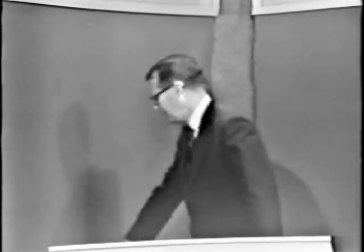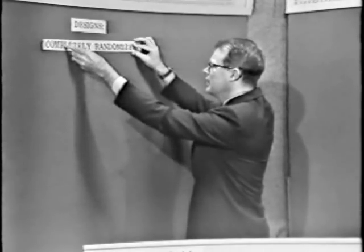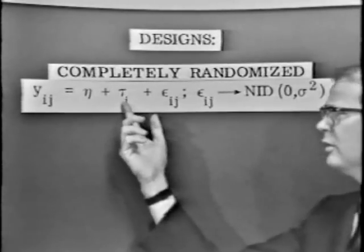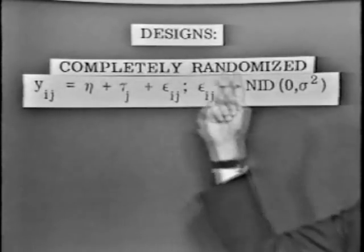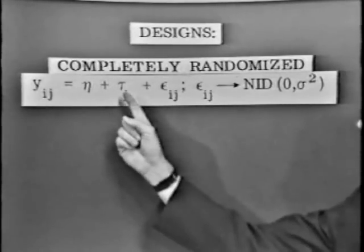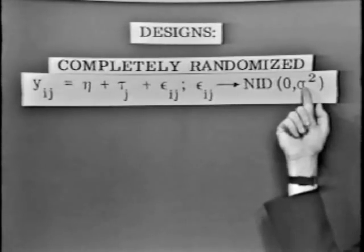This brings us to a quick review of the kinds of experimental designs we've been talking about. We've actually had two kinds so far. The completely randomized design is a situation in which there are K treatments, and we plan to run a certain number of observations in each treatment. If there were four treatments and five observations for each, we'd make up 20 little slips of paper, mix them all up and draw them — that's how we collect our data, and why it's called a completely randomized experiment. The mathematical model appropriate for this design has the mean, the treatment effects, and the errors, which we assume are normally and independently distributed with mean zero and homogeneous variance sigma squared.